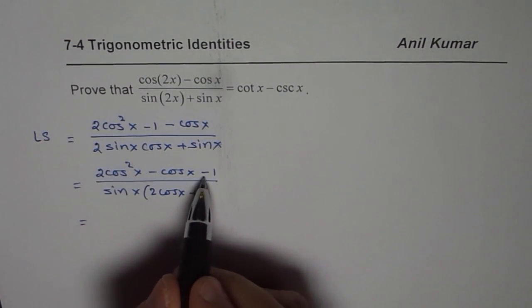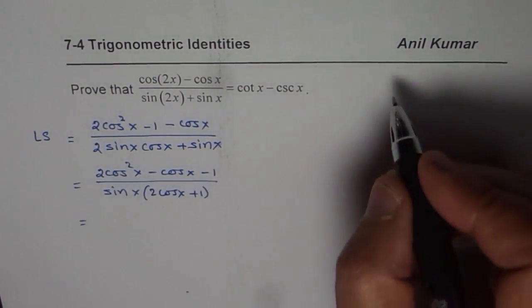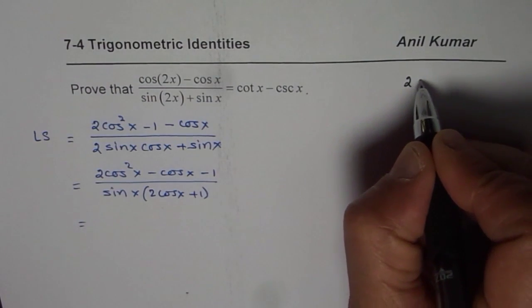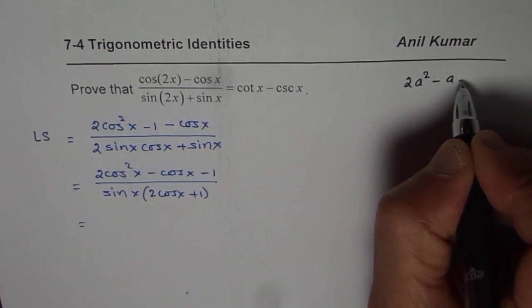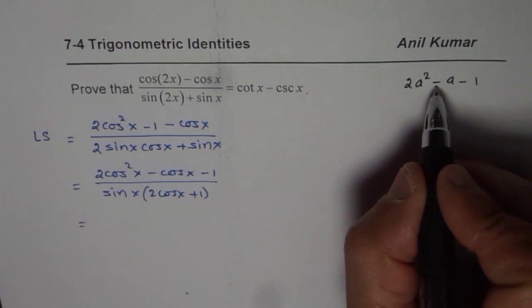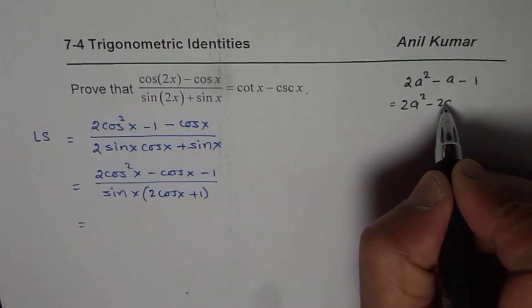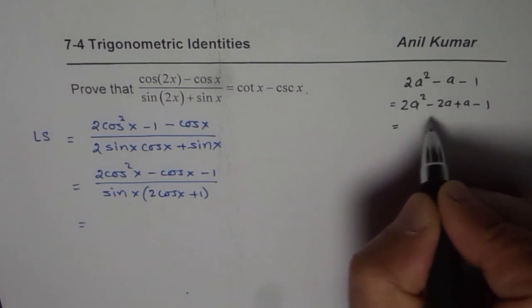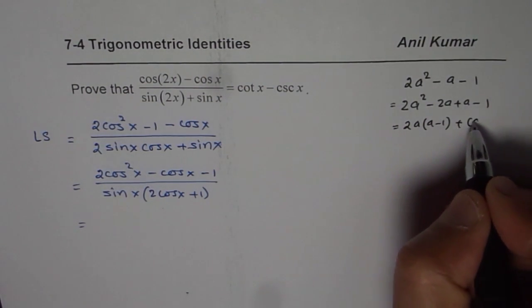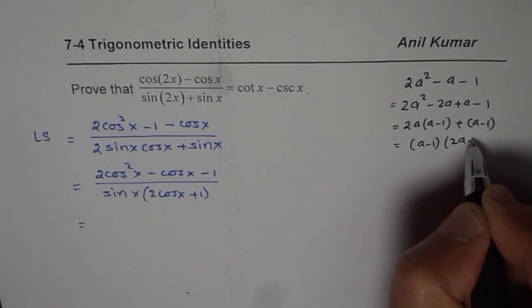Now this quadratic equation can be factored. You know there are different techniques. One of them is product and sum, which is widely used. So you can think about this equation as 2a squared minus a minus 1. So we are looking for product as minus 2 and sum as minus 1. So we can break this as 2a squared minus 2a plus a minus 1. When you factor 2a here, you get a minus 1, and plus a minus 1 there. So a minus 1 is common factor, 2a plus 1.